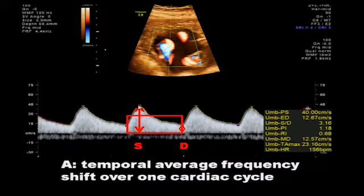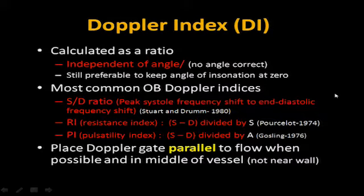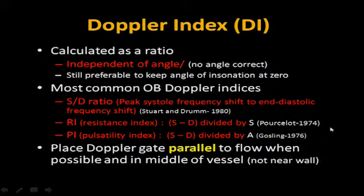The S/D ratio is the difference between peak systole and end diastole. We also look at the pulsatility index and the resistive index. The Doppler index (DI) is calculated as a ratio and is independent of angle, so no angle correction is needed. The most common OB Doppler indices are: S/D ratio (peak systolic to end diastolic frequency shift), resistive index (S minus D divided by S), and pulsatility index (S minus D divided by A). You need to understand these basic principles to understand your Doppler.